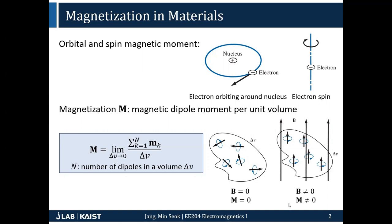But when there's an external B field applied, the magnetic dipoles inside the material tend to react to the magnetic field. They can be parallelly aligned, which is called paramagnetism. They can be anti-parallelly aligned, which is diamagnetism. And they can also show some nonlinear behaviors, which is called ferromagnetism.